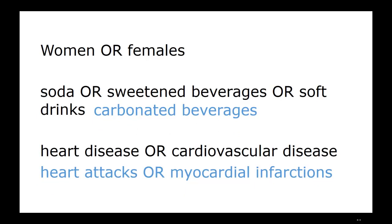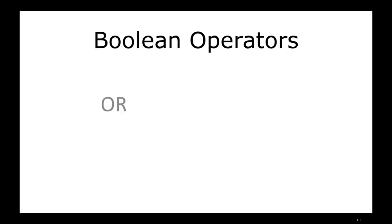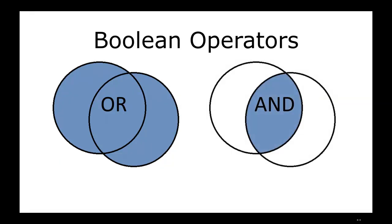Notice the ORs between the related words. OR is a Boolean operator. Boolean operators are used by databases to define the relationship between terms. AND is another Boolean operator. Adding an OR between two words asks the database to find either term in the article record. AND asks the database to find both terms in the article record.